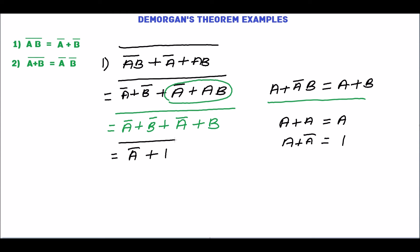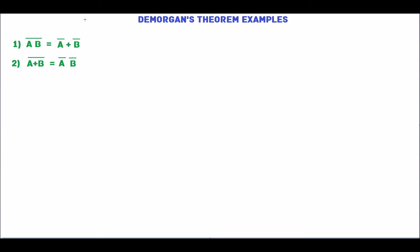Then whole complement. A plus 1 equal to 1. So, A bar plus 1 is 1 complement. 1 complement is 0. So, 0 is the answer.